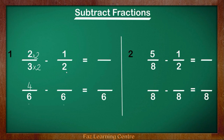Let's look at the next fraction, which is a half. 2 times what equals 6? 2 times 3 equals 6. Remember the rule: if you times the denominator by 3, you have to times the top by 3 too. 1 times 3 is 3. Once you have done that, we are ready to subtract. 4 take away 3 equals 1, so our answer is 1 over 6.